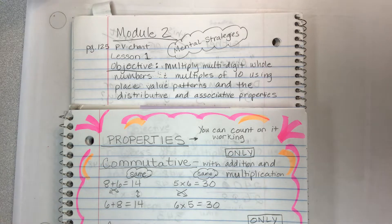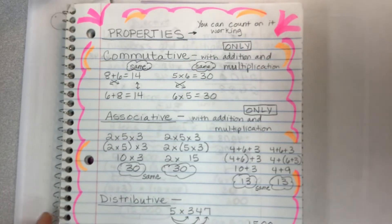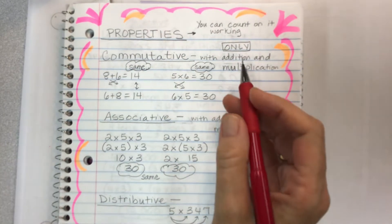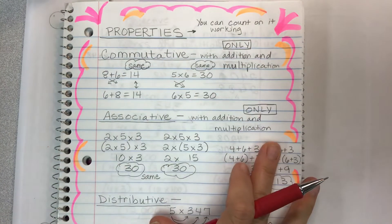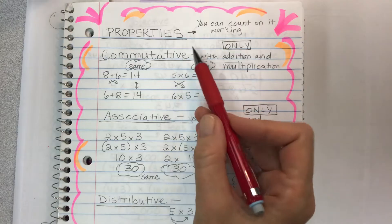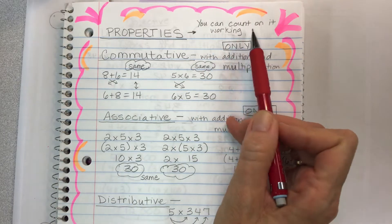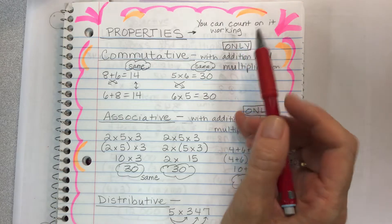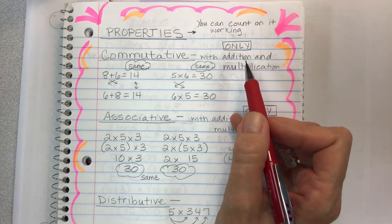So what are properties? This is what I call poster day. You can make a poster in your notebook using these properties and make it all pretty. Properties are a mathematical term meaning you can count on it working every single time — you don't have to test it or say 'will it work this time?' Yes, it's going to work every time.